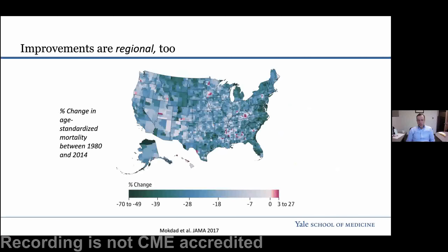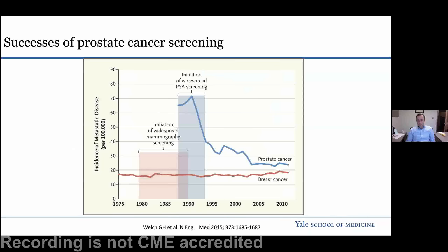We can also look at improvements in prostate cancer mortality — these are trends over time, looking at the percentage change in the age-standardized mortality between 1980 and 2014. When we think about implementing a public health initiative like screening and early detection, we really apply this to a homogenous country, but the reality is that there are tremendous differences at the zip code level and really the household level. This question of regional variation in care and outcome is clearly very interesting and one of the tools we've used to look at the adoption of these technologies.